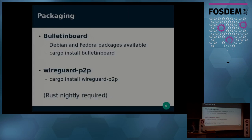The Bulletin Board is already ready and packages are available for Debian and Fedora. You can download them, or if you want to build it yourself, you can use Cargo — it's also implemented in Rust. WireGuard peer-to-peer currently has no packages, but I hope to provide them next month. You can also install it using Cargo, but Rust Nightly is required because it uses async features that are only in Nightly.